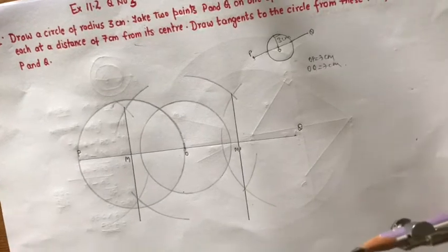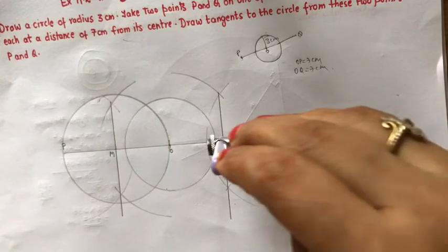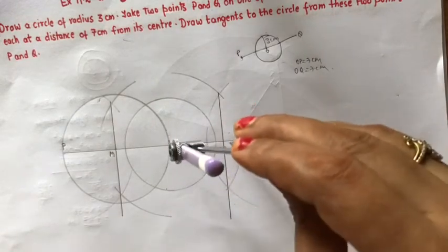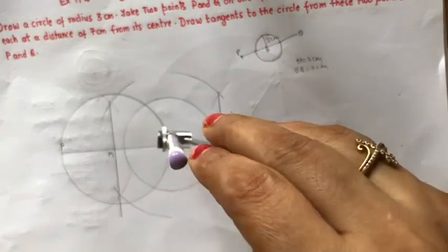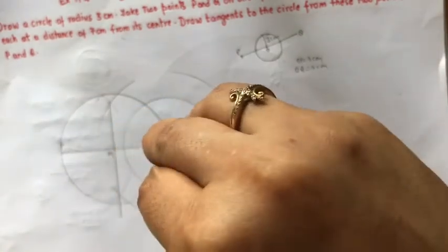Now take M dash Q as radius. Take M dash Q as radius. It will be same, same radius. You will have M dash as center. Draw another circle, draw another circle.